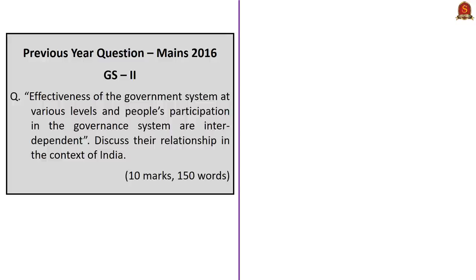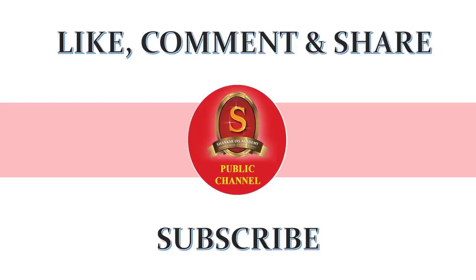Now let's take up a practice Mains question asked in UPSC Mains 2016, GS2 paper: 'Effectiveness of a government system at various levels and people's participation in the governance system are interdependent — discuss the relationship in the context of India.' This is a ten-mark question to be written within a word limit of 150 words. We request aspirants to post their written answers in the comment section; posted answers will be evaluated and suitable feedback will be given within a reasonable time frame. With this, we have come to the end of today's news analysis. If you like the video, please like, share, comment, and subscribe to Shankar IAS Academy's YouTube channel for more updates on the UPSC exam. Thank you.